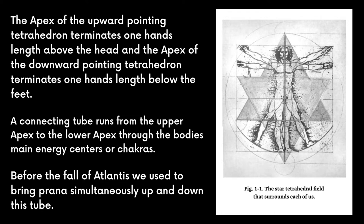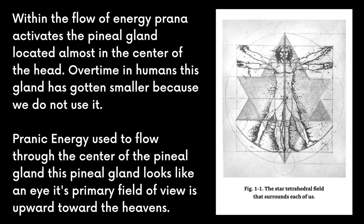A connecting tube runs from the upper apex to the lower apex through the body's main energy centers or chakras. Before the fall of Atlantis, we used to bring prana simultaneously up and down this tube — it was a different way of existing in our bodies. Within the flow of this prana, we activated our pineal gland, located almost in the center of our heads. Over time, in humans, this gland has gotten smaller because we've stopped breathing prana through our bodies in this way. Pranic energy used to flow through the center of the pineal gland.